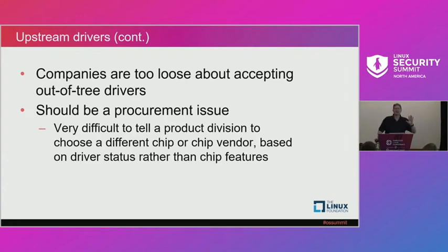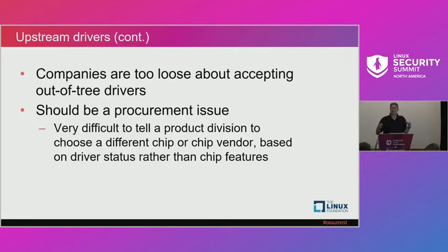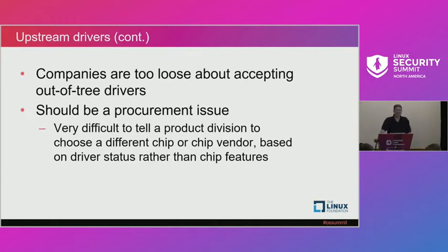In my opinion, companies are too loose about accepting out-of-tree drivers. This should be a procurement issue. When a business unit goes to an external supplier and gets a chip, part of the procurement process should be: is there an upstream driver? Of course it comes with a driver, but often the nuance is not in the contract — that we want an upstream driver that's maintained. As part of the open source program office, I'd like to make that a gating function for procurement, but you can't do that because the divisions are just too autonomous.